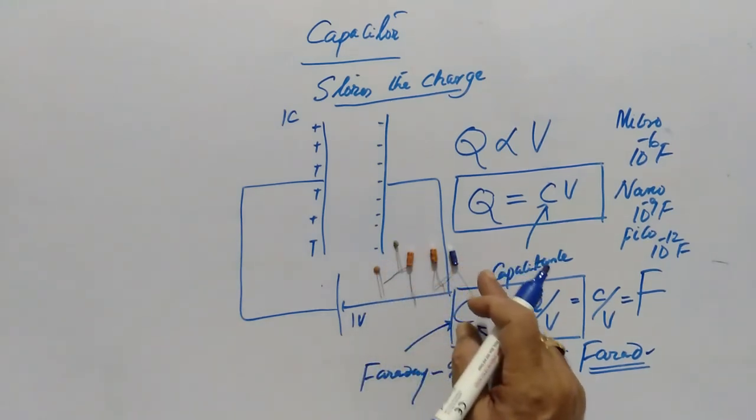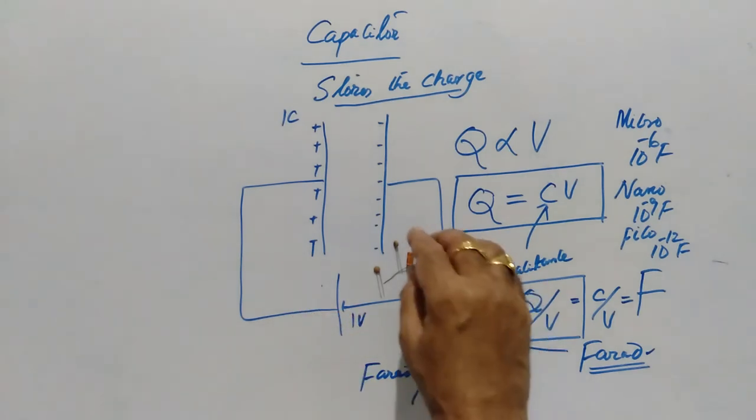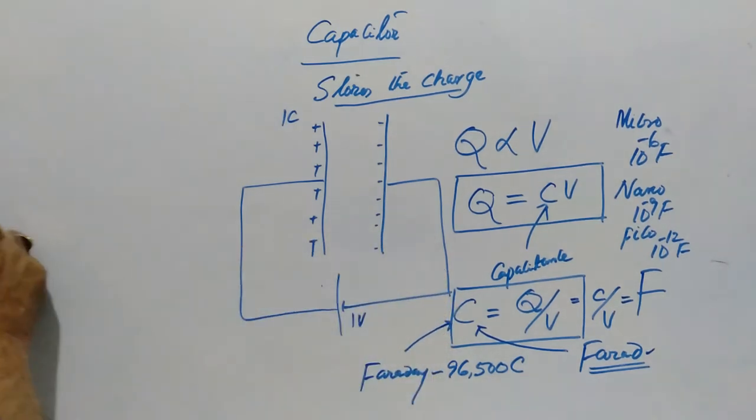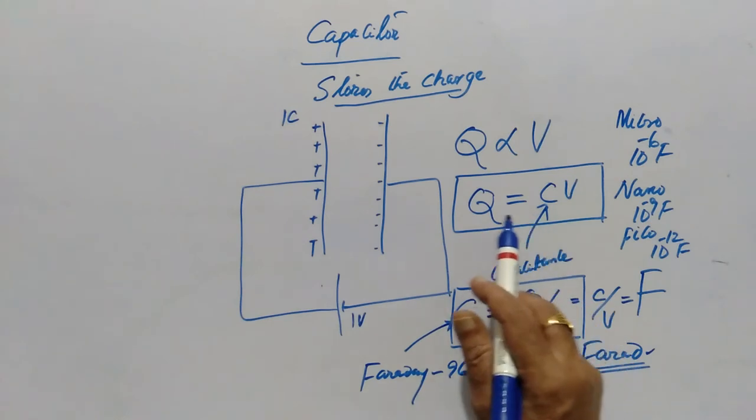On each and every capacitor, the maker prints the value of the capacitance. As we have learnt that coulomb is very big unit for the charge, similarly Farad is very big unit and in practical purposes, we always use the capacitors of the order of micro, nano and picofarads.